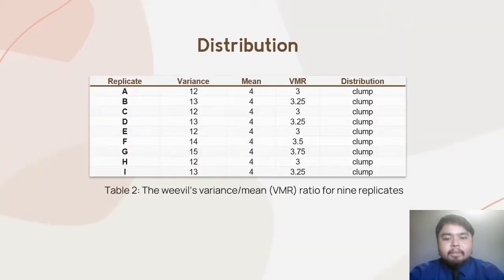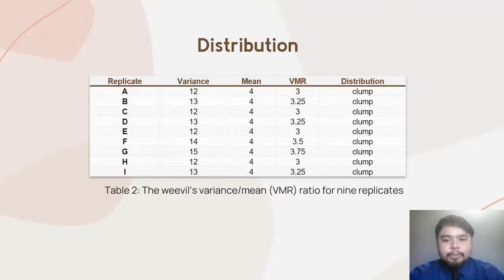The variance mean ratio was calculated in order to identify the type of distribution. Based on Table 2, all the replicates had a higher variance than the mean and gained values greater than 1, which can be categorized into clumped distribution. The majority of the rice weevils are spread out in a clumped or aggregate distribution.